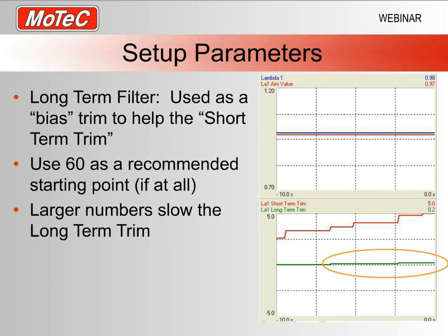The long-term filter determines how long the ECU keeps an eye on the short-term trim as a filtered value to decide what to do with the long-term trim. In my example, I have an aim lambda of 0.97 in red and an actual lambda of 0.98 — so the engine is running slightly leaner than we want. With the short-term trim, based on the rate, we keep adding fuel. I've done this on the simulator to keep things simple.